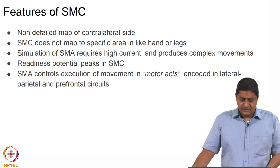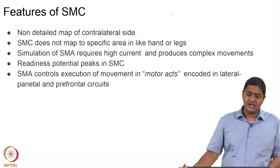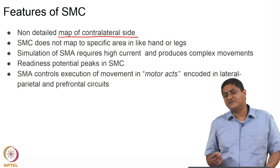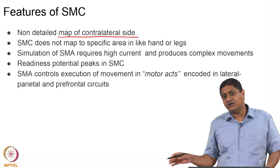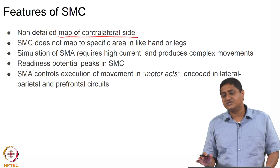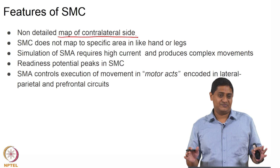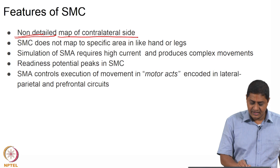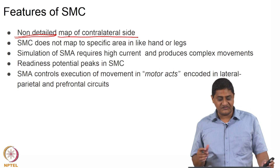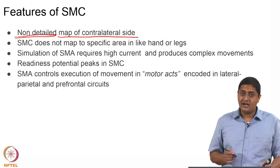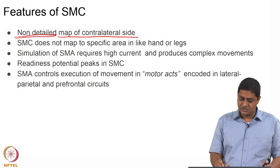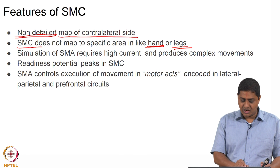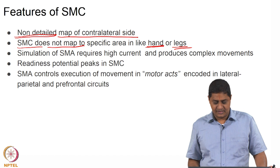Also importantly, the supplementary motor cortex contains a map of the contralateral side of the body. Crucially, this differs from the map in the primary motor cortex. The primary motor cortex has a detailed map, while the supplementary motor cortex has a relatively non-detailed map of the contralateral body. Unlike primary motor cortex, which maps to specific areas such as hand and leg, the supplementary motor cortex does not map to those specific areas.